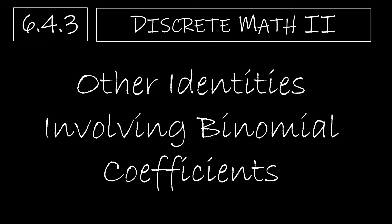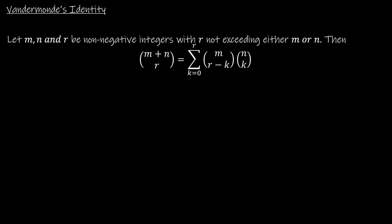In this short video, we're going to take a look at just two other identities that involve binomial coefficients. The first is Vandermonde's identity, and that says let m, n, and r be non-negative integers with r not exceeding either m or n.